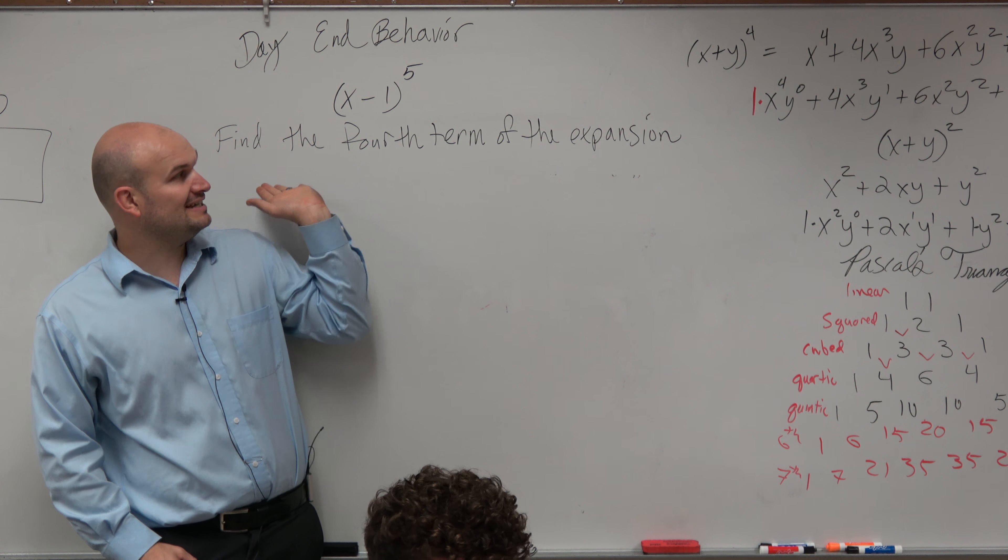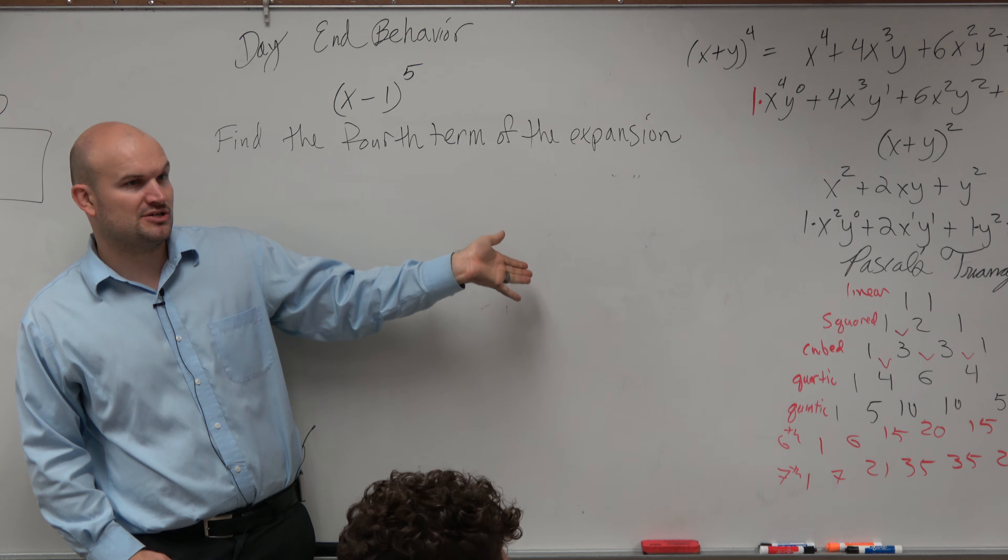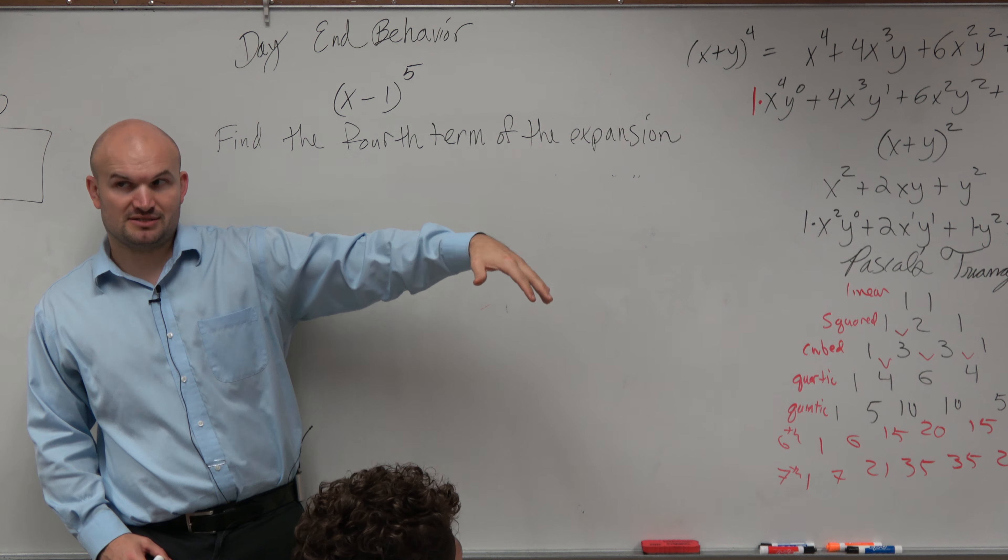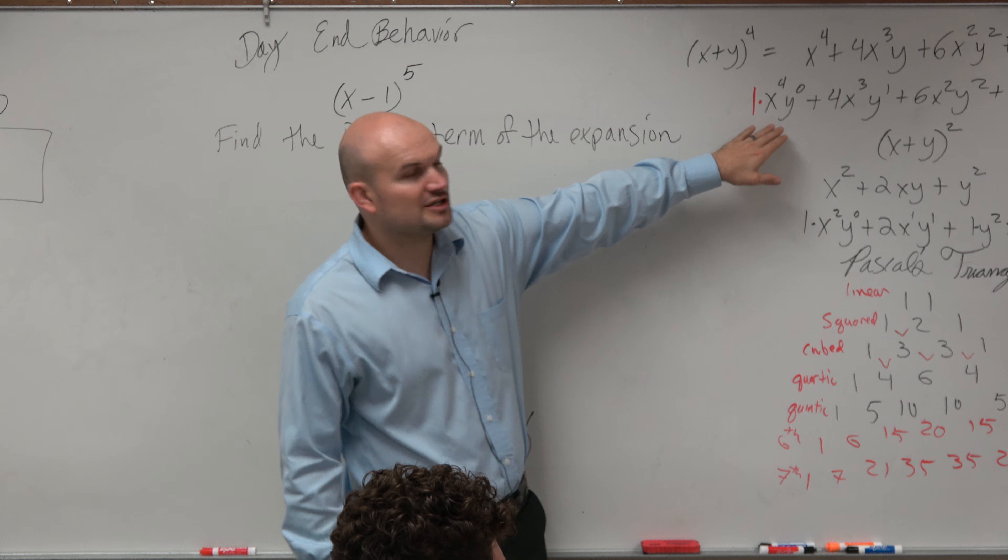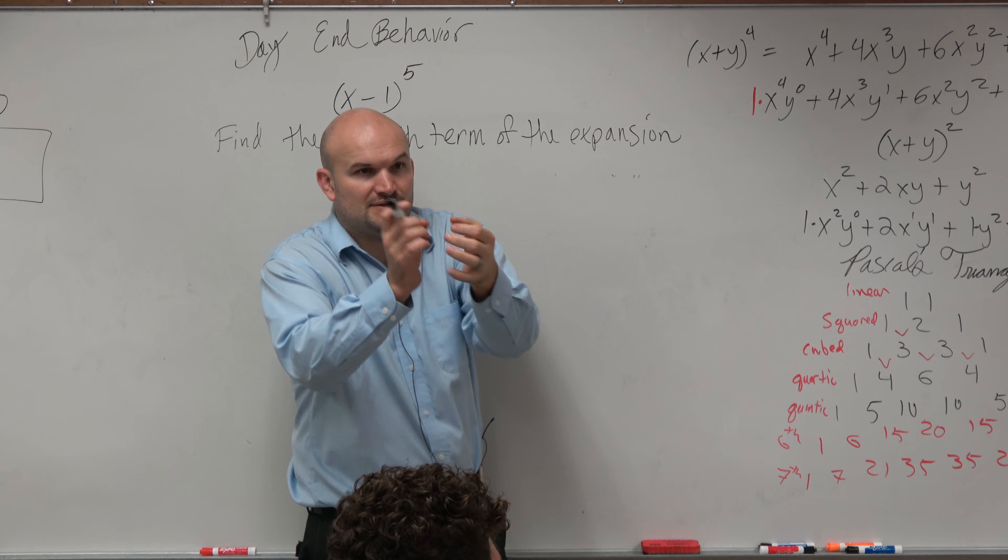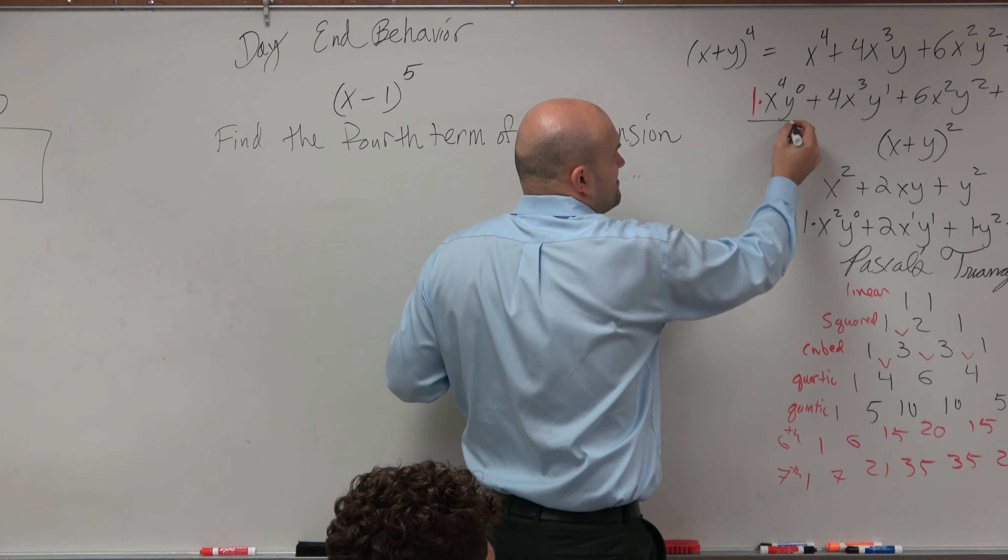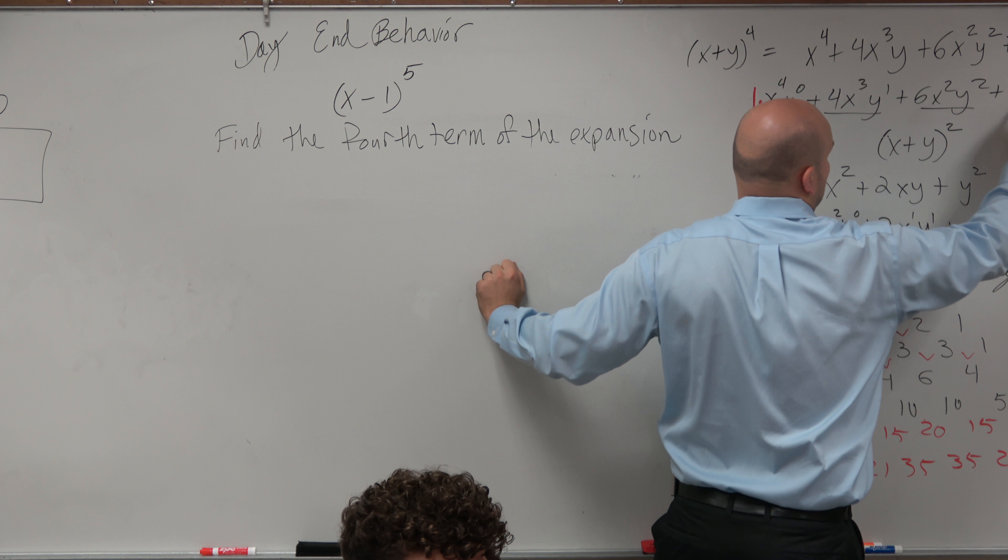This one is just saying find the fourth term of the expression. Now I did forget to mention this, but when we have our expansion, your expansion is separated by monomials. So this would be the first monomial, second monomial, third and fourth.